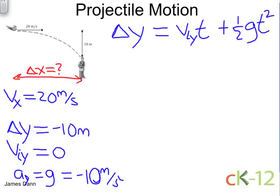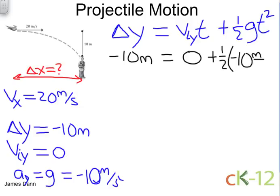Let's plug in the numbers. We have minus 10 meters for the change in vertical distance. That's equal to zero because the bird is flying horizontally. Then that's plus one-half minus 10, that's meters per second squared times the time squared, which is the variable we are trying to find.